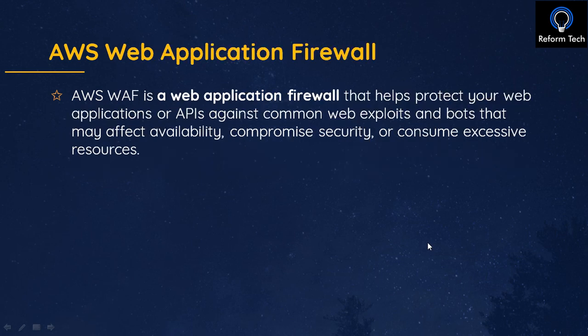AWS WAF — Web Application Firewall — protects your web applications and APIs. It monitors and protects applications and APIs built on services like CloudFront, API Gateway, or AppSync. You can block endpoints based on criteria like source IP, originating country, headers, or request bodies.